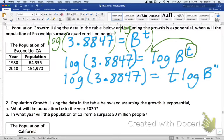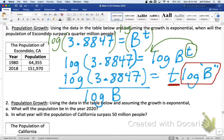Log 3.8847 equals t log b. And that b is the b I have saved in my calculator. And now we isolate t. We want to know when the population will be a quarter million in Escondido. So, we're going to divide both sides by this expression, or this quantity log b. So, that's going to come over here. Log of 3.8847 divided by log b equals t.